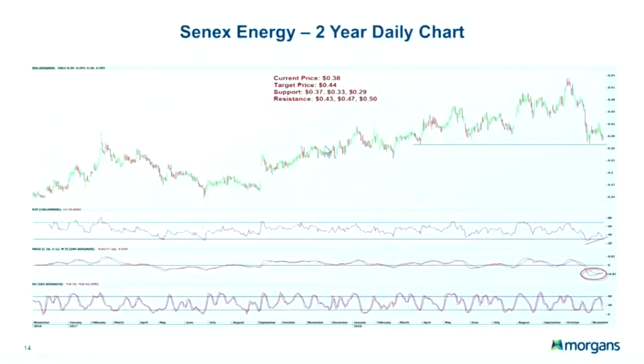Cenex Energy — another favorite. We've seen a strong decline to previous key support around 37 cents. I'm seeing a bullish divergence between price and RSI and extremely oversold MACD readings, so I'm very comfortable buying around current price levels. First price target is 44 cents, though medium term that level could also be exceeded.